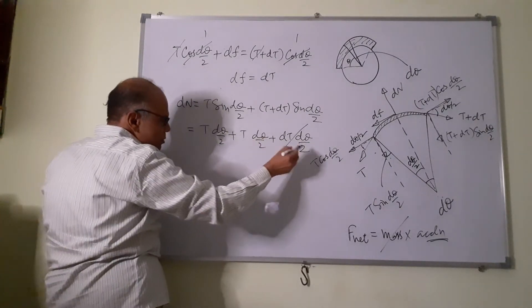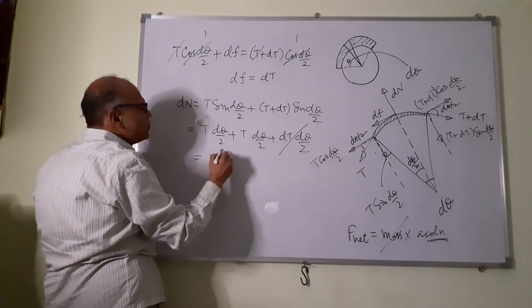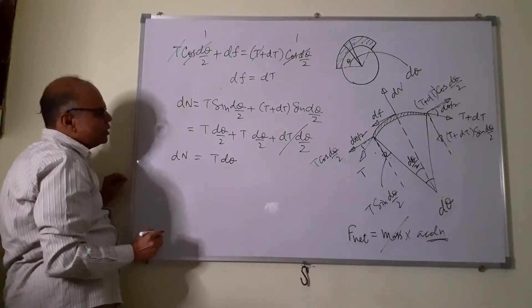So if they are multiplied they will become extremely small. So this goes up and you have this as T d theta. So Dn is T d theta.